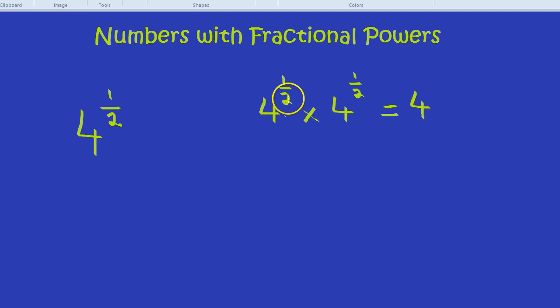So without even knowing what 4 to the power of a half means, we know that if we multiplied it by itself, we would get 4 to the power of 1. And anything to the power of 1 is just itself, 4.